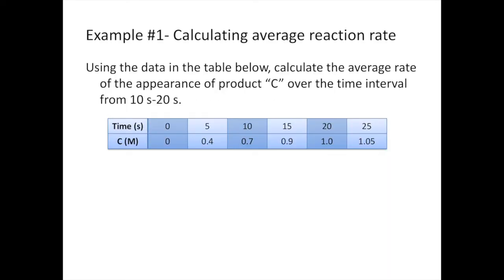Let's look at one example where we're going to calculate an average reaction rate. We're going to use the data in the table below and calculate the average rate of the appearance of a product — we'll call that product C — over the time interval from 10 seconds to 20 seconds. In this problem we have time on the top and the concentration of product C given to us in molarity.